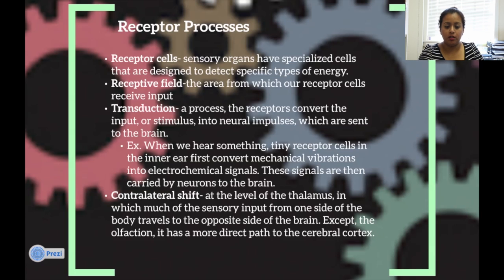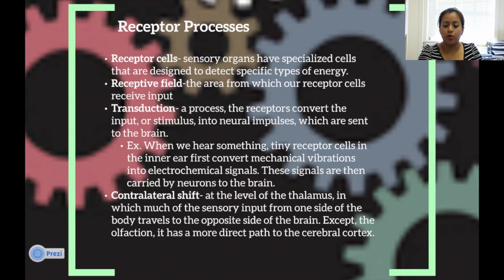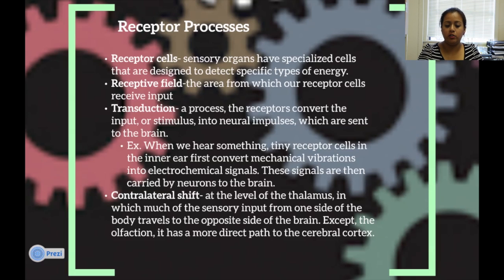Receptor processes. Receptor cells: sensory organs have specialized cells that are designed to detect specified types of energy. Receptive field: the area from which our receptor cells receive input. Through transduction, receptors convert the input or stimuli into neural impulses which are sent to the brain. For example, when we hear something, the tiny receptor cells in the inner ear first convert mechanical vibration into electrochemical signals, and these signals are then carried by neurons to the brain.